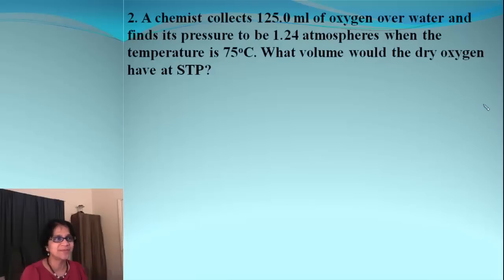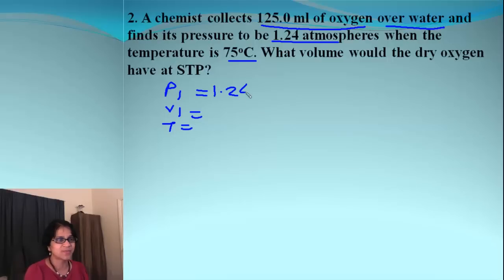Here is one more problem. In this problem, we are collecting oxygen gas over water. Let's list all the values which are given. It is P1, V1 and T1. What is the P1? It is 1.24 atmosphere. What is the volume V1? It is 125 milliliters and temperature T1 is 75 degrees Celsius or when we add 273, we get 348 Kelvin.